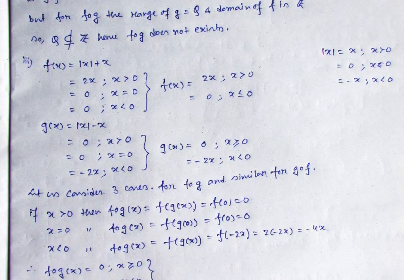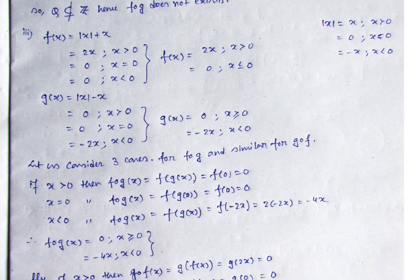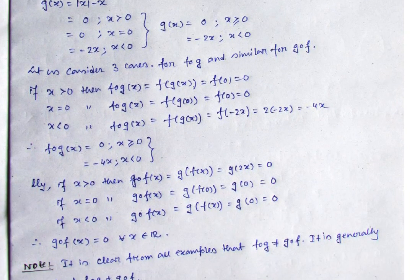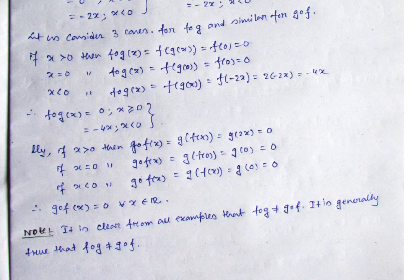I am giving you an exercise — try to solve the last problem by yourself and comment your answer. Looking at these problems, we understand that G∘F and F∘G are not the same in general. Composition of mapping does not satisfy the commutative law — that is the main thing I want to convey. Problem number three is very very important; try to solve it.